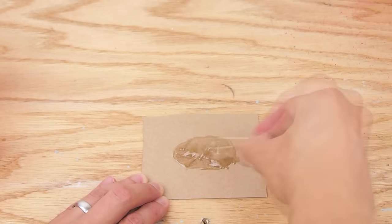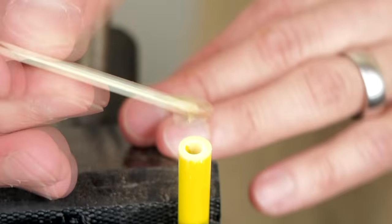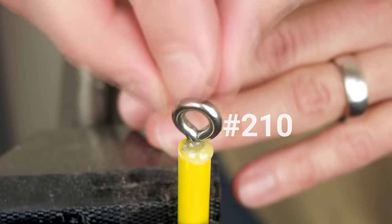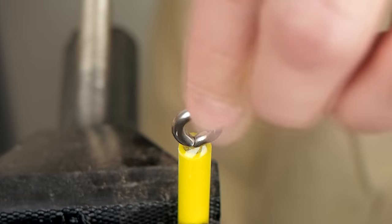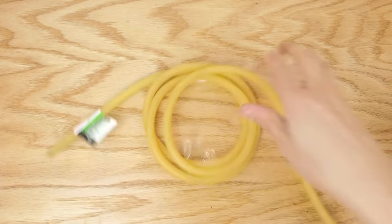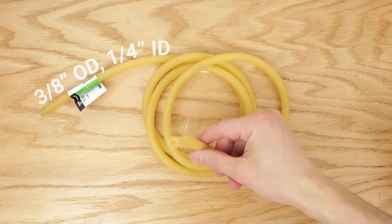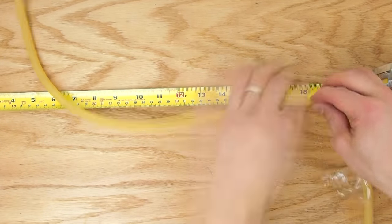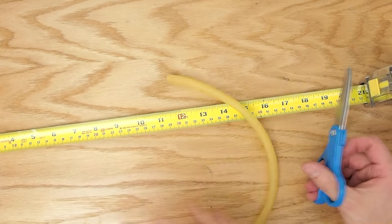Then I mixed up more epoxy, filled the hole and inserted a number 210 stainless steel screw eye and I let the epoxy cure. The pole spear gets its propulsion from a stretchy band that is attached to the screw eye. To make the band I used 3/8 inch OD 1/4 inch ID latex tubing that's commonly found at hardware stores. I cut the tubing to about 18 inches.